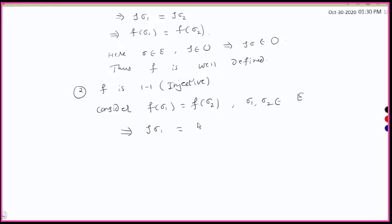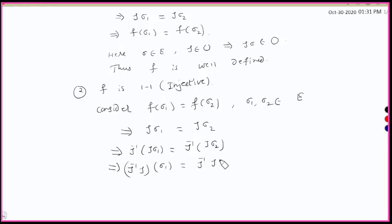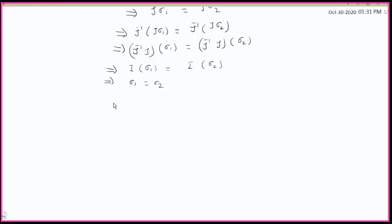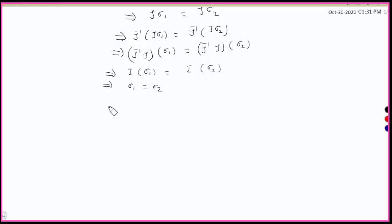f(σ₁) = τσ₁ = τσ₂. Since τ belongs to Sn, τ inverse exists. Applying τ inverse on the left on both sides, we get τ inverse τσ₁ = τ inverse τσ₂. Since τ inverse τ is the identity permutation I, this gives Iσ₁ = Iσ₂, which implies σ₁ = σ₂. Thus f is one-one.